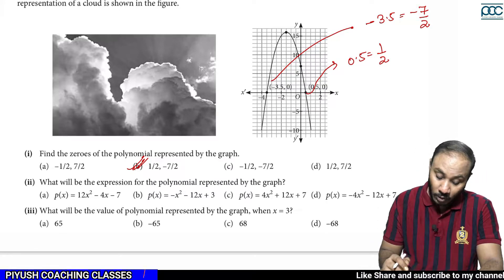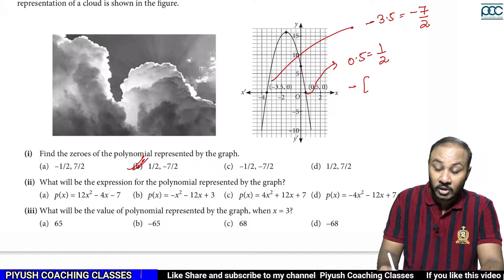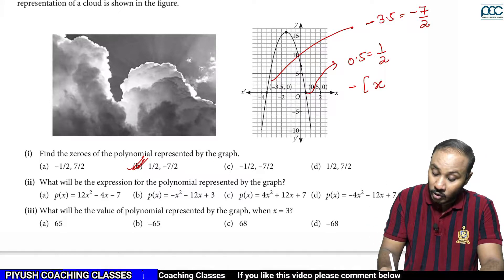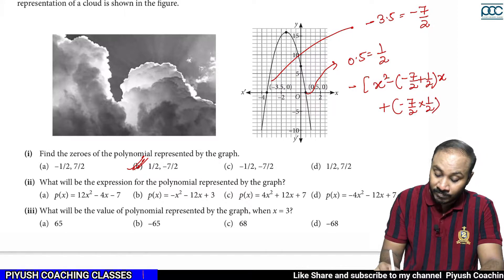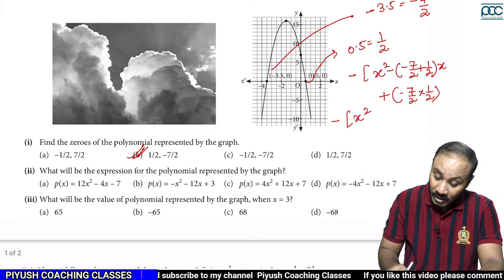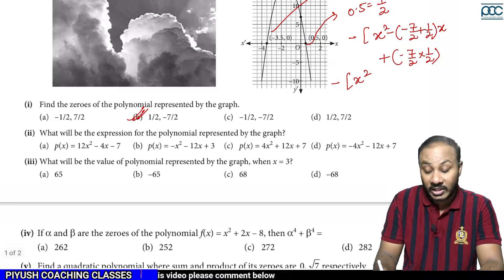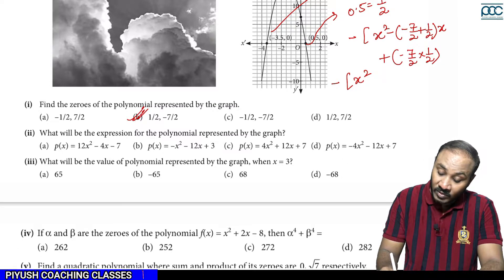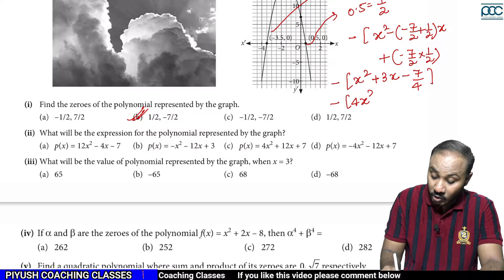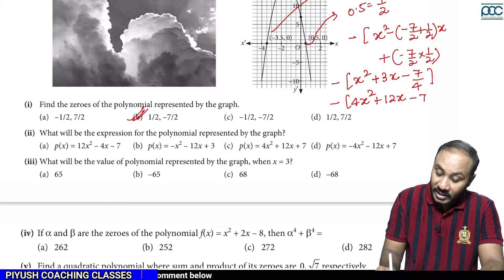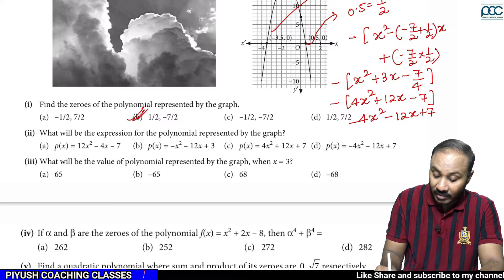What will be the expression for the polynomial? First I put a minus sign because the curve is inverted. Using the formula: minus times (x² minus sum of roots into x plus product of roots). The sum is: (1/2) + (-7/2) = -6/2 = -3. So we get minus minus, which gives plus 3. The product is -7/4. Multiplying through by 4 gives: 4x² + 12x − 7.